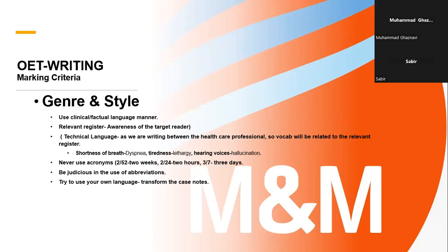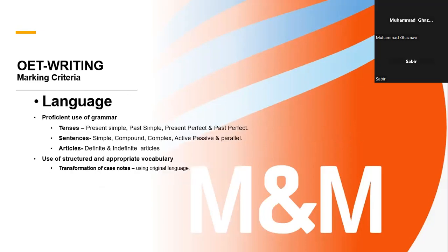According to audience awareness, you have to select your language. Register means the selection of the right word — in simple terms, it is the transformation of the case notes. You should not use abbreviations time and again and must be judicious in your use of abbreviations. We are not supposed to use acronyms — for example, 2/4, 3/7 — these are all acronyms. Try to use your own language rather than the language of the case notes; transform the case notes into your own language. In the language part, we need to see tenses, sentences, articles, parts of speech, and so on.